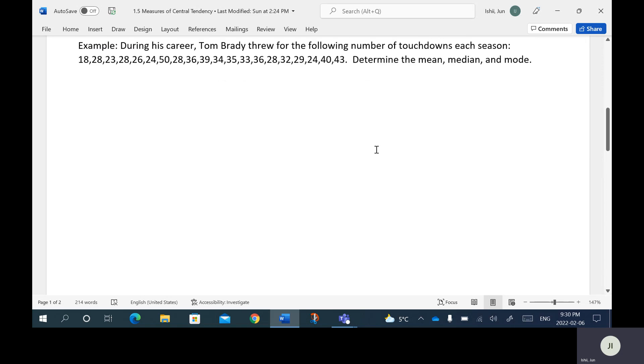So example here. During his career Tom Brady threw for the following number of touchdowns each season and so these are the touchdown totals for all 20 seasons that he played. Those are the touchdown totals. So I'm just going to make a note here that N is equal to 20. So there's 20 values. We want to determine the mean, median and mode.